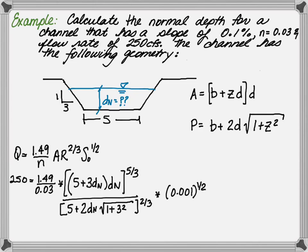And divided by the wetted perimeter, which includes, again, the base width of 5 feet and the side slopes of 3. However, the normal depth is not known, to the 2 thirds power. And the slope of 0.001 to the half power.